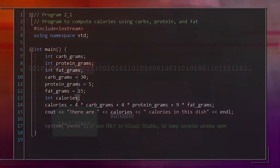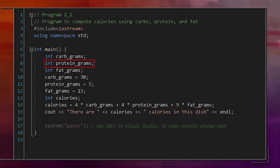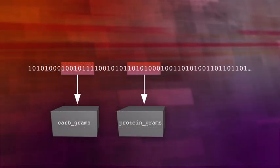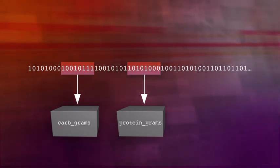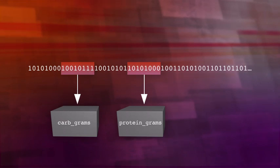Our next line of code is another variable declaration. We're telling the computer to set aside another box of integer type memory that we will call proteingrams. Every variable declaration sets aside a box of memory with some value inside. The way we get to write variables in a form we understand is with the variable type. C++ is called a strongly typed programming language because we always have to specify the type whenever we declare a variable.